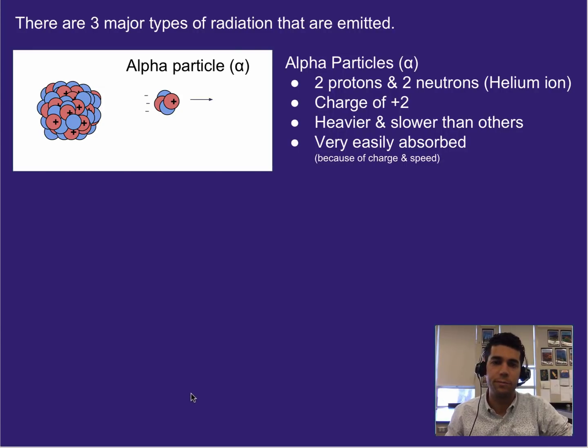Alright, so the three major types of radiation emitted during nuclear decay are the following. First one is an alpha particle. So if you think about a nucleus of an atom, we've gotten rid of the electrons here, and we're just looking at all the protons and neutrons in the center. Sometimes when they're unstable, they emit an alpha particle.